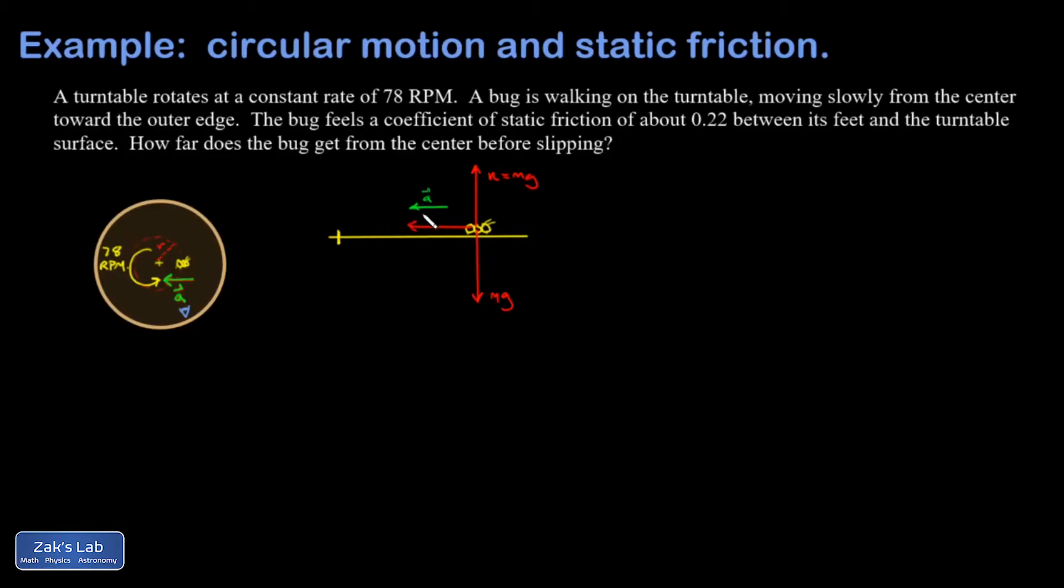Then I look at the centripetal acceleration. This is, again, a geometric fact. In order for the bug to be moving on a circular path, it must be accelerating at all times toward the center of curvature with a magnitude of v squared over r. That might be a little counterintuitive, but it's a fact. When I look at my force diagram, my acceleration points this way toward the center of curvature. Therefore, the force that's causing that acceleration must point towards the center of curvature, the same direction.